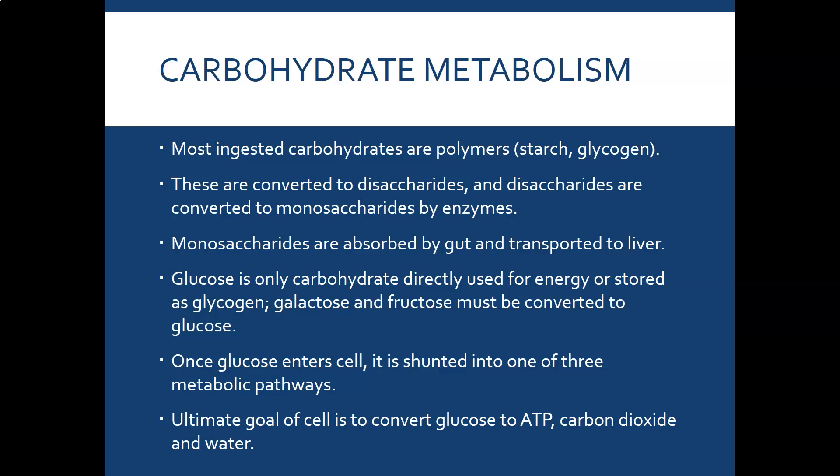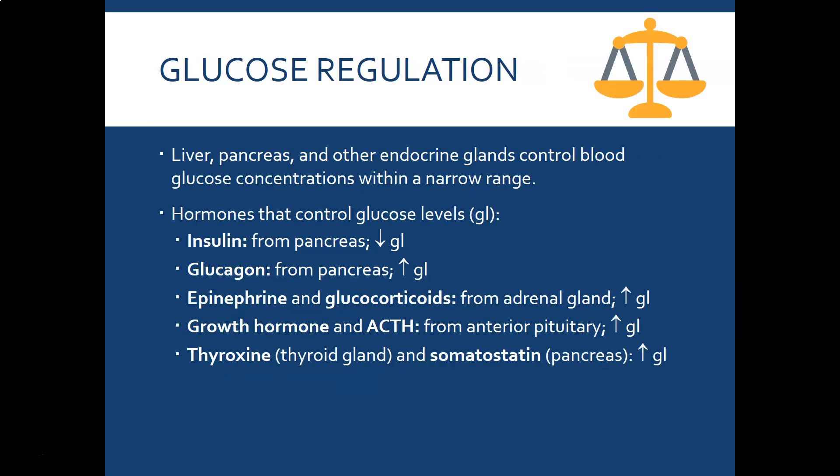Your muscles cannot use fructose or galactose — they have to use glucose. Once glucose is sent throughout the body, it needs to enter the cell, and insulin helps it enter. Once inside, there are three different metabolic pathways it can take, but the ultimate goal is to convert glucose to ATP, which is the energy molecule, with carbon dioxide and water as waste products.